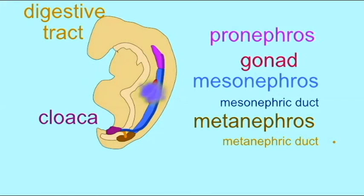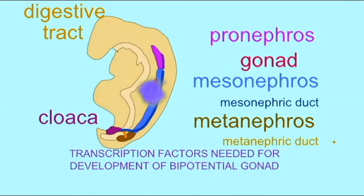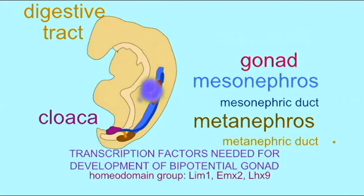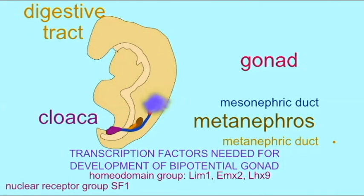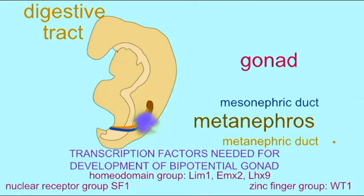The genes required to turn on the developmental pathways for the development of a bipotential gonad include a number of different transcription factors, such as the homeodomain transcription factors LIM1, EMX2, and LHX9, the nuclear receptor transcription factor SF1 — or steroidogenic factor 1 — and the zinc finger transcription factor WT1, or Wilms tumor gene 1.